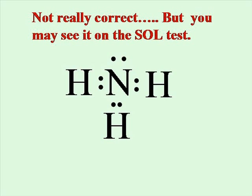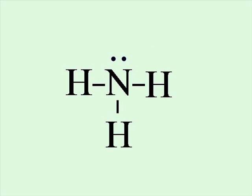Occasionally you will see Lewis dot structures drawn with the pair of electrons between atoms shown as dots, but this is not correct. When you have pairs of electrons between atoms, you need to show those with a line. This is the correct format.